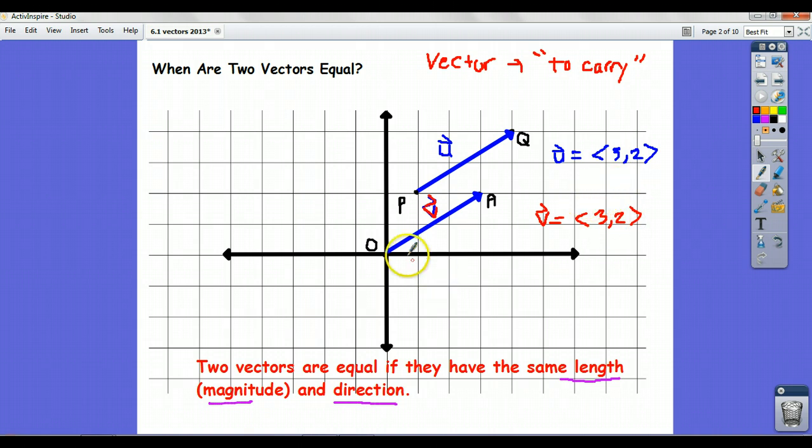And so those vectors are equal. Notice these vectors have the same length and direction. How do I know they have the same length? See how I describe them by writing them in component form? Once you do that, you're guaranteed that they have the same length and direction.